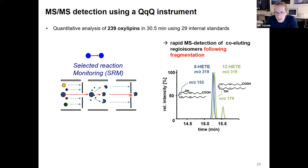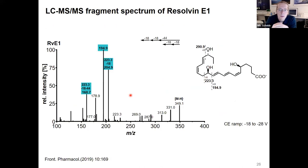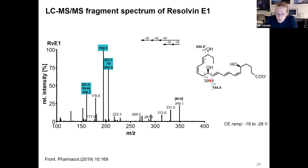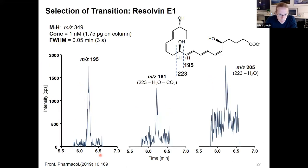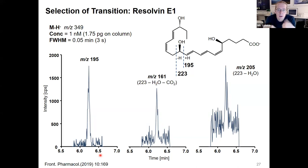For example, for resolvin E1 we look at the fragment spectra and select fragments which are structurally meaningful, resulting from fragmentation of the backbone of the molecule. For molecules present at low concentration or where there is much discussion about their presence, we use one quantifier and two qualifier transitions to be sure that a signal is truly from that compound.